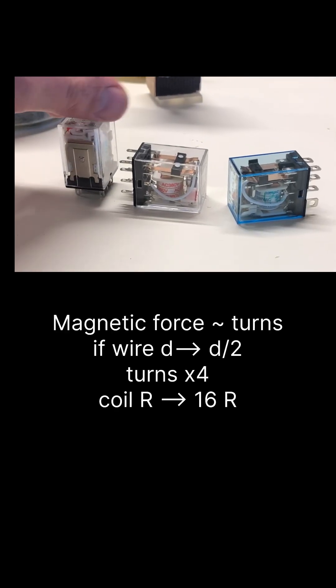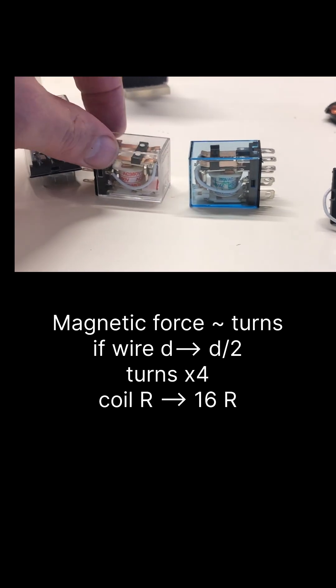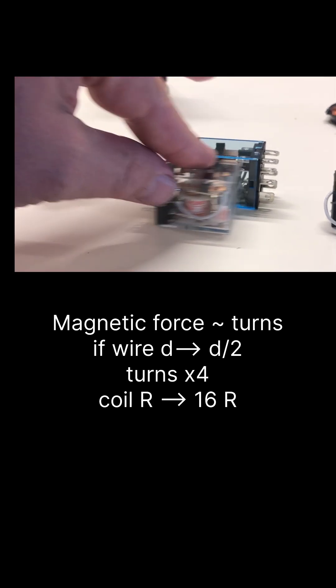Relays from Aliexpress had 35 kilo ohms with red coil and 17 kilo ohms with blue coil. The size is the same.